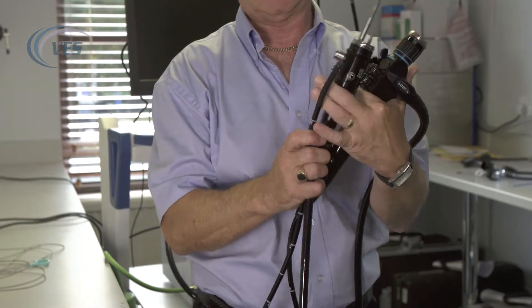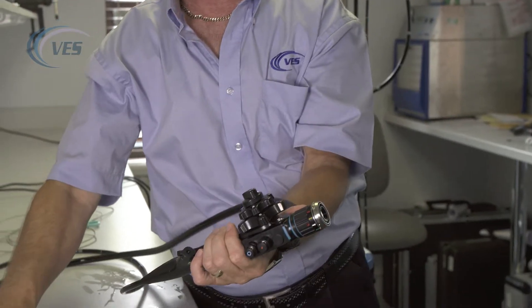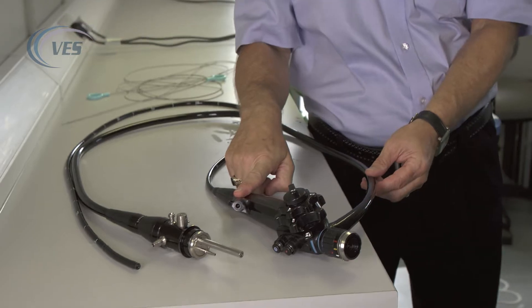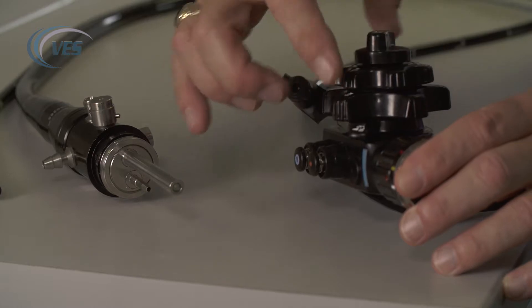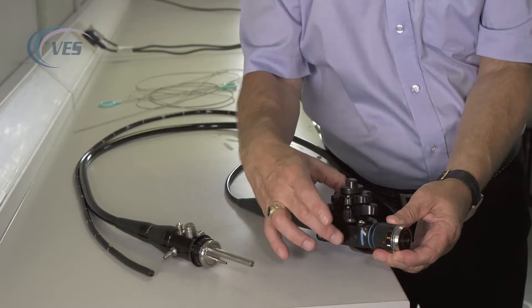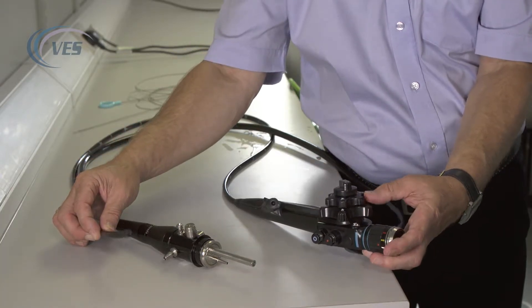What is really important to preserve the life of the scope is to make sure that the distal tip is straight before introducing anything through the biopsy port. To check that the tip is straight, the U and the L on the wheels here are lined up together just behind the red button. As you can see, the tip is now quite straight.